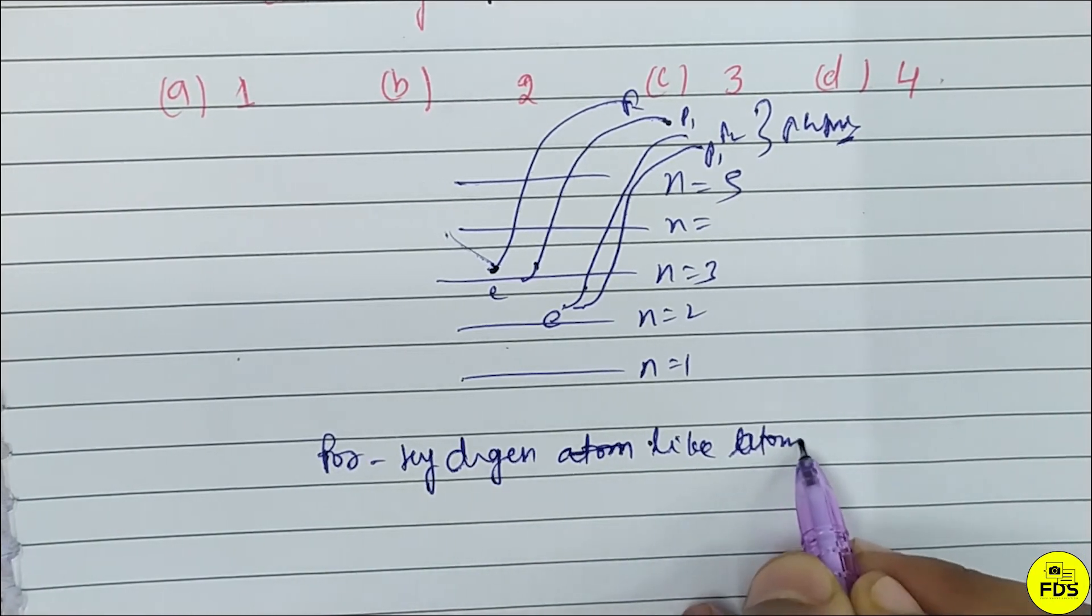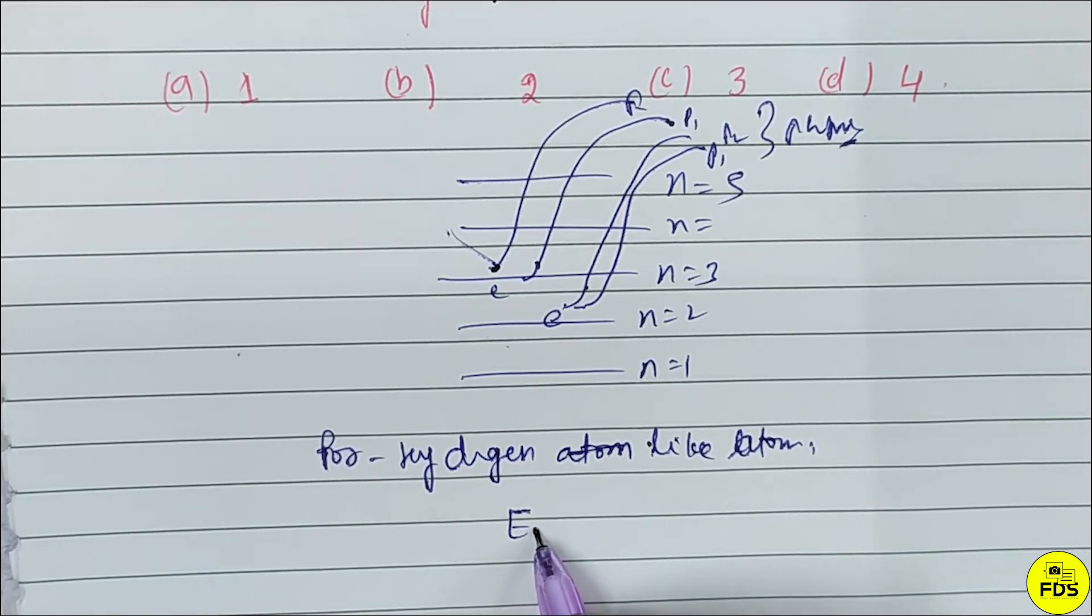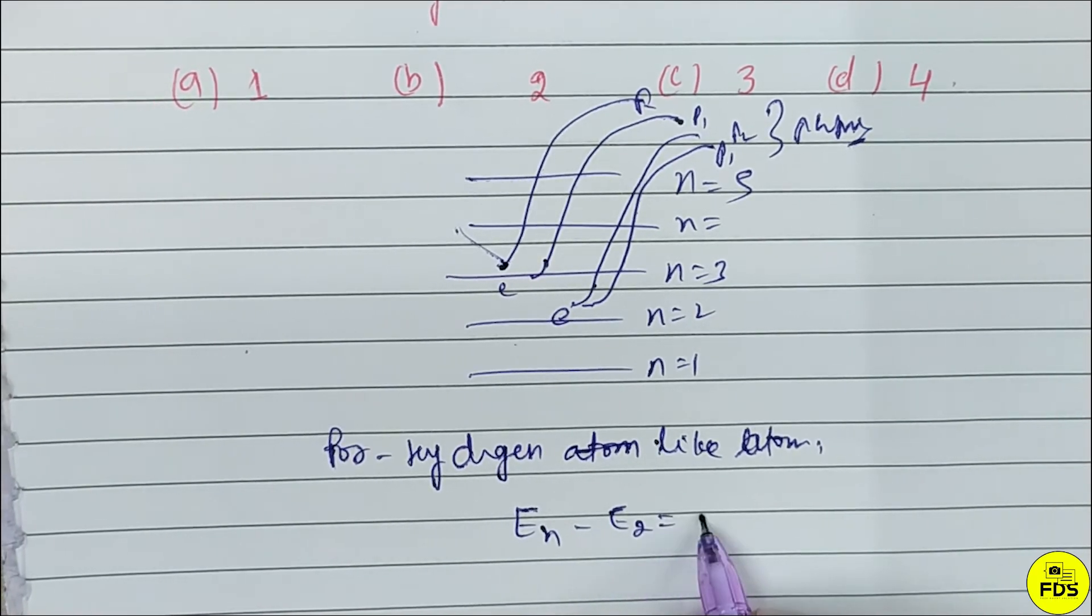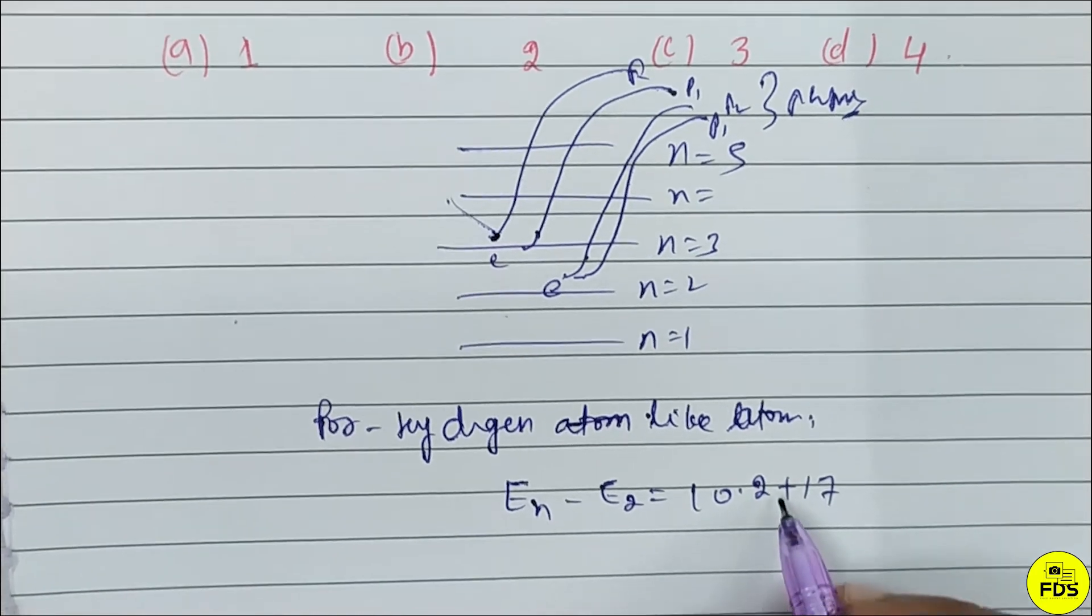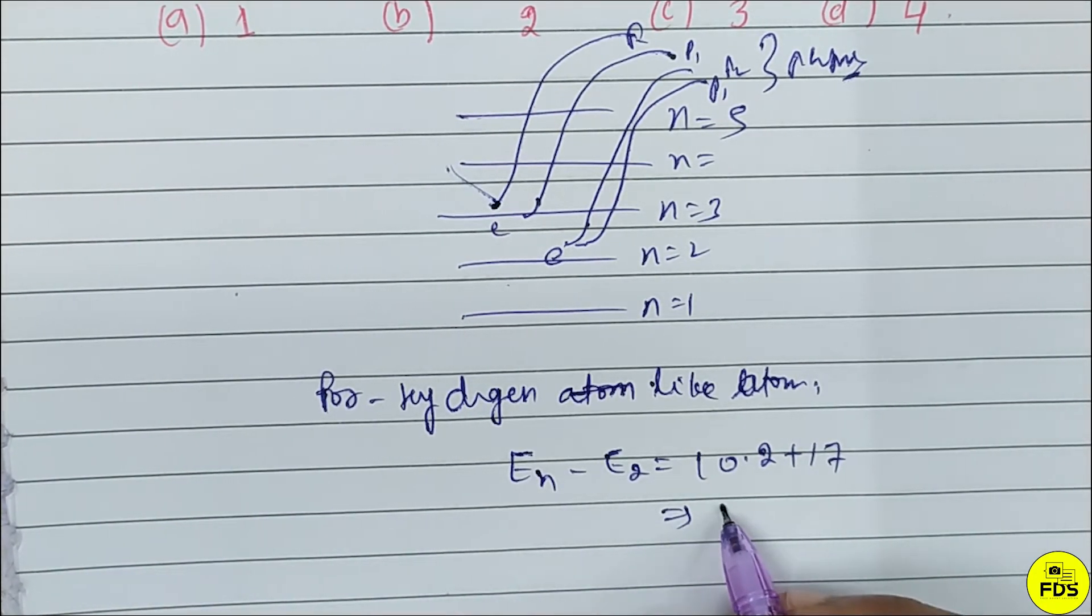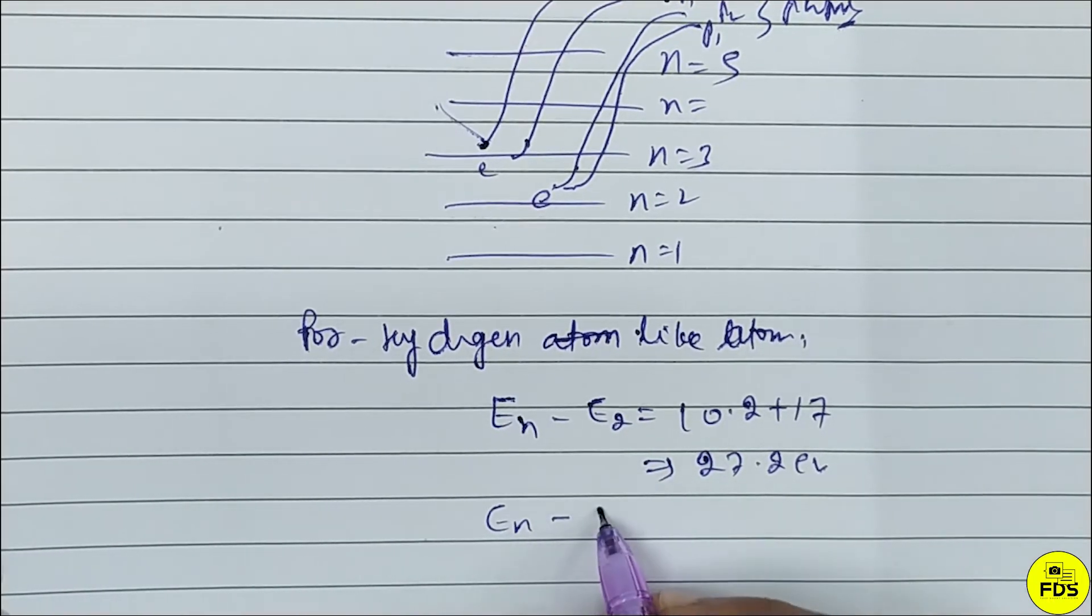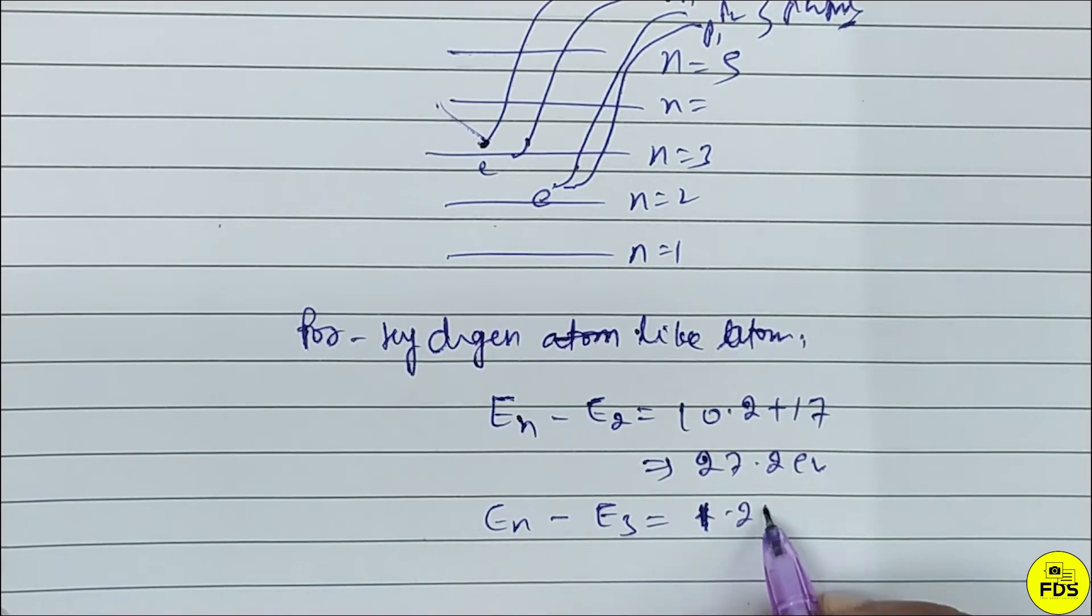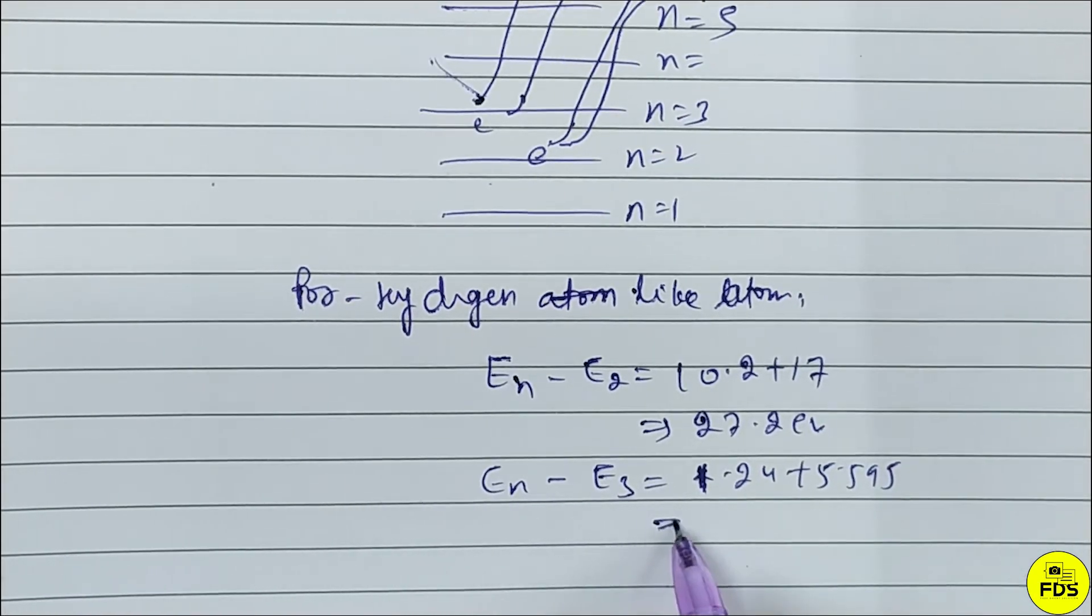The energy will be: E_n minus E_2. Second time 10.2 and 17 are given, so 27.2. And the energy second to third time is 4.25 plus 5.9, which equals the total.